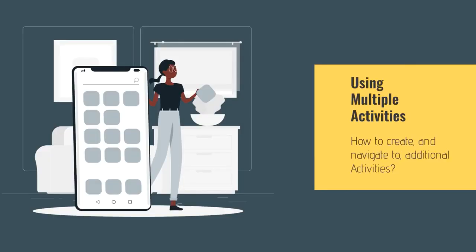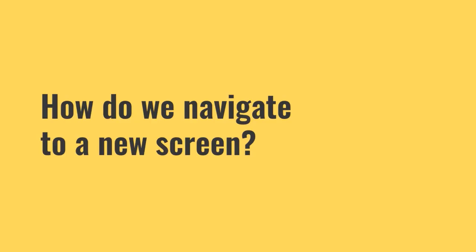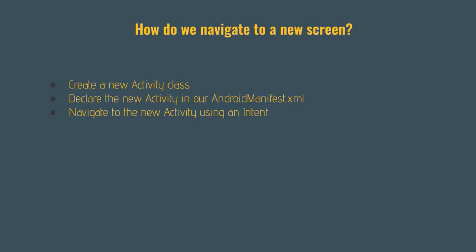Our first topic this week is using multiple activities — specifically how to create and navigate to additional activities within our application. To navigate to a new screen, we'll create a new activity class, declare that new activity in our Android manifest file, and then navigate to it using an intent.